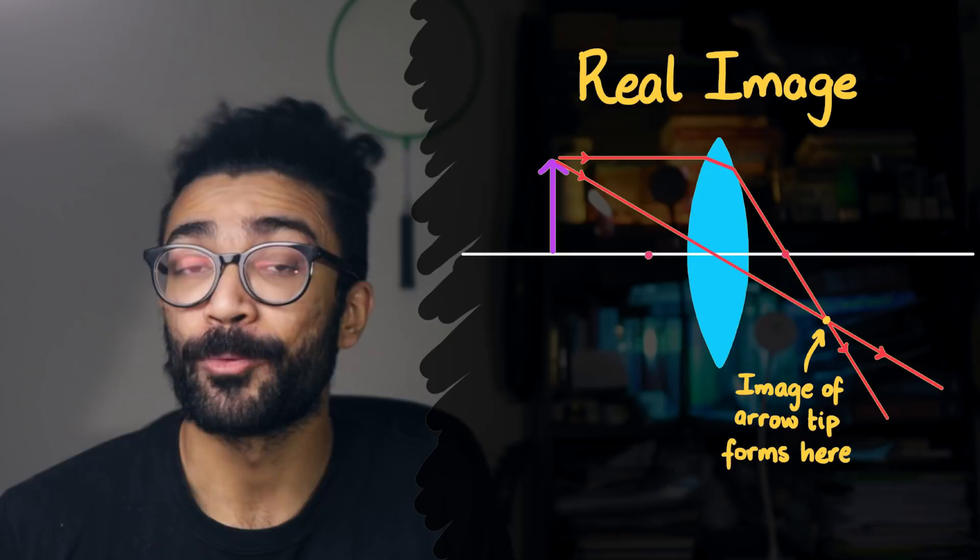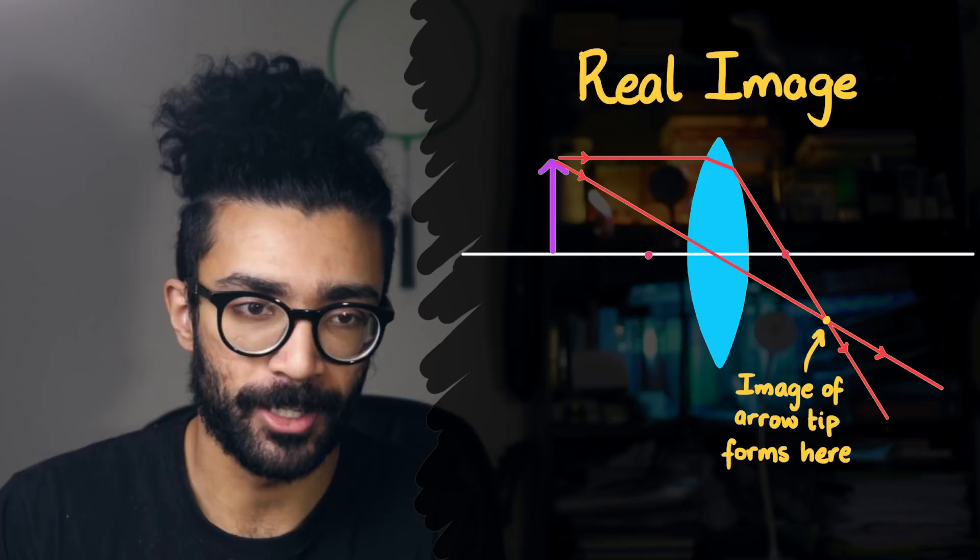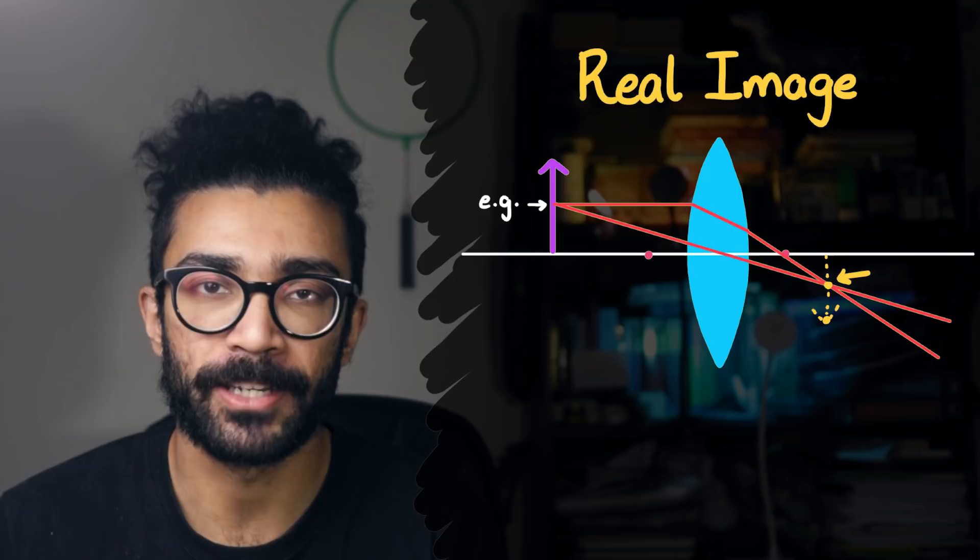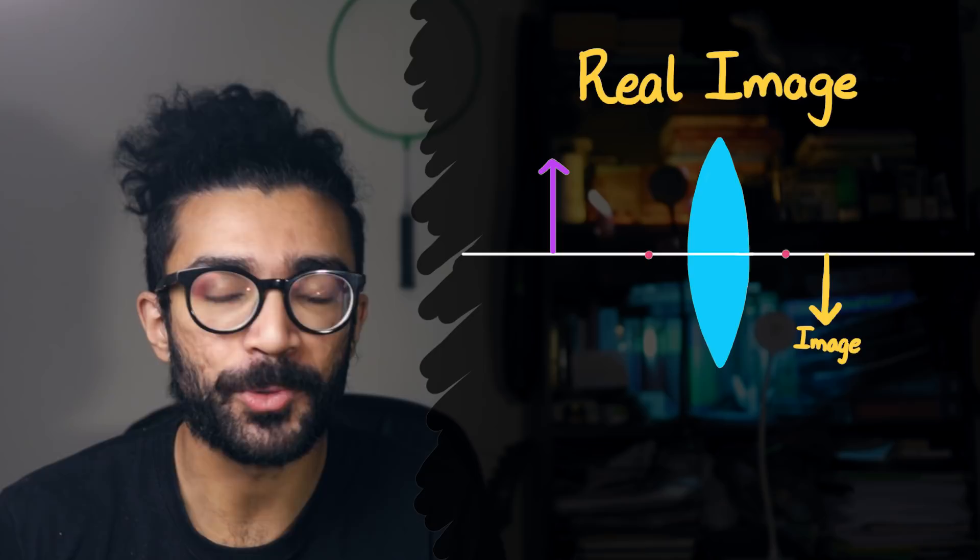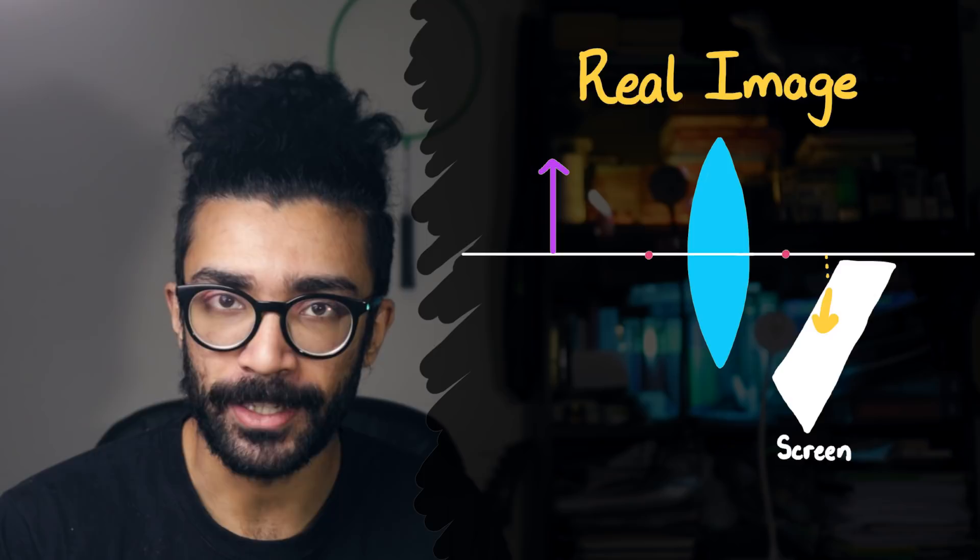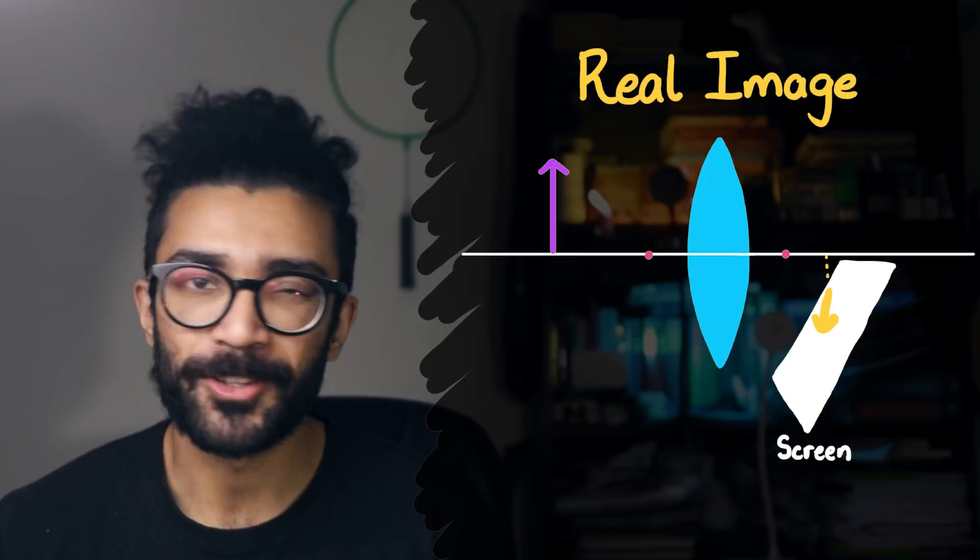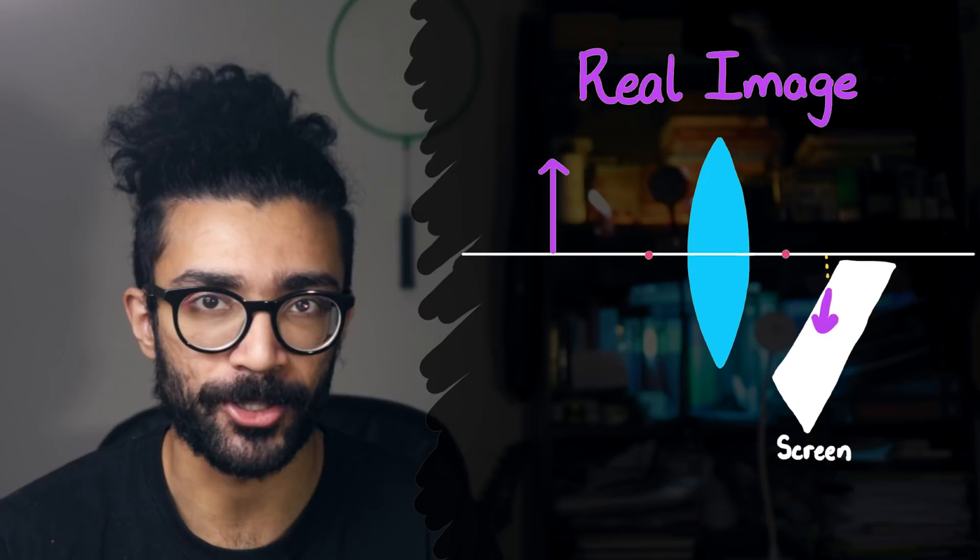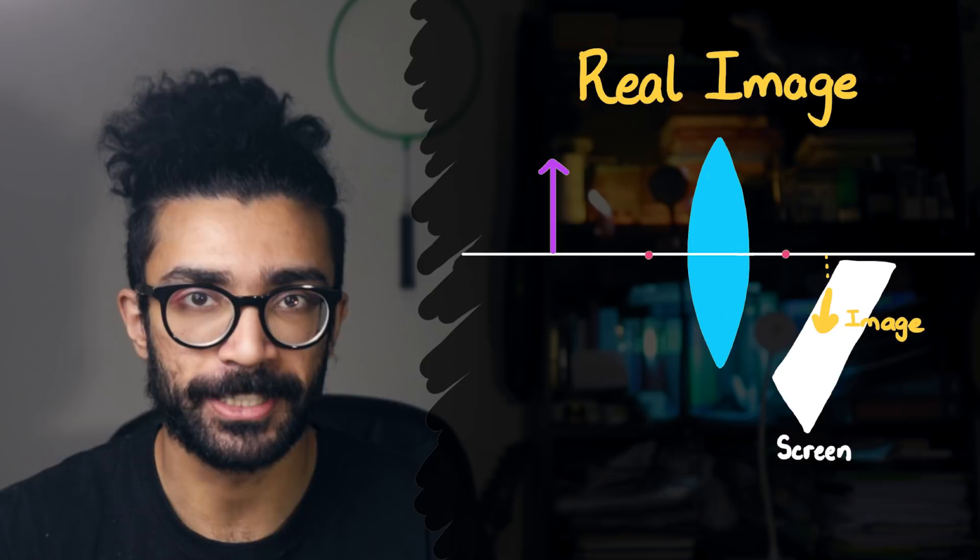And we can do the same sort of analysis for the rest of the points along our object arrow. For example, this point will have an image produced at this point. And so the whole object will have an image that looks something like this. It's inverted or upside down. And it's a real image once again, because it's formed by the convergence or meeting of light rays. If we were to put a screen here, we'd actually see a picture of our object, an image of our object forming on that screen.